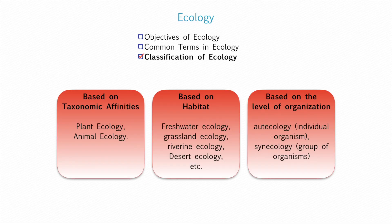The classification of Ecology is based on different methods. Based on taxonomic affinity, it is classified into Plant Ecology and Animal Ecology. Based on habitat, it is divided into Freshwater Ecology, Grassland Ecology, Desert Ecology, River Ecology etc. Based on the level of organization, it is divided into Autecology — for organisms that live independently — and Synecology — for species that live in groups of organisms.